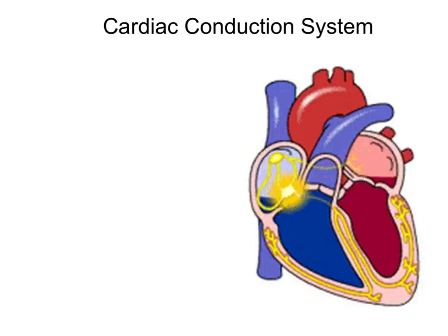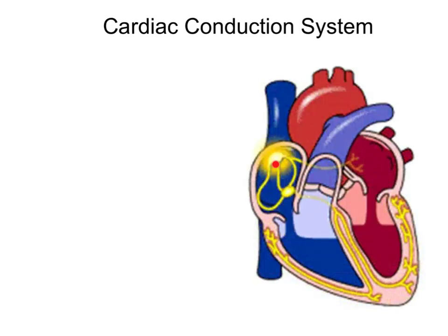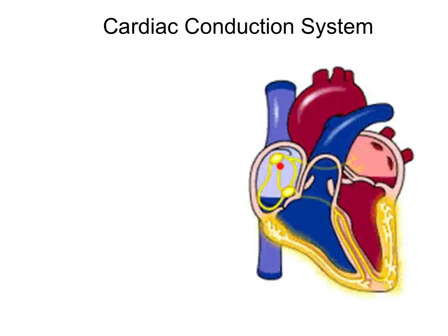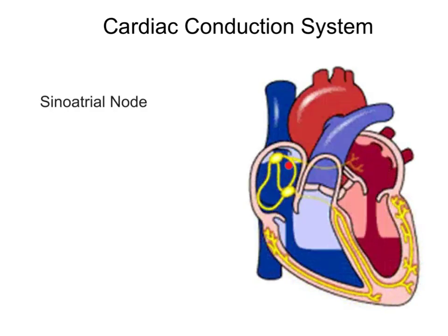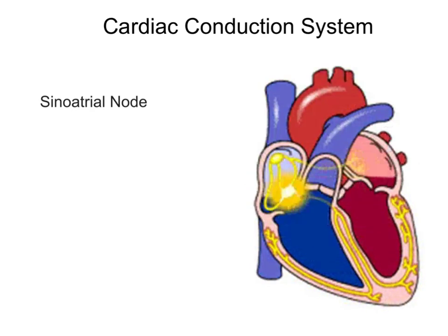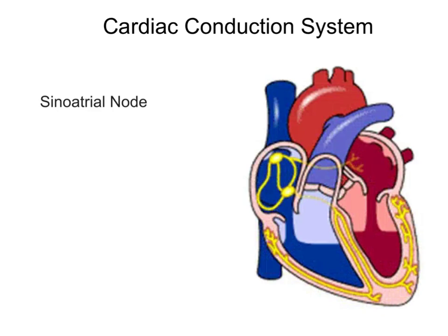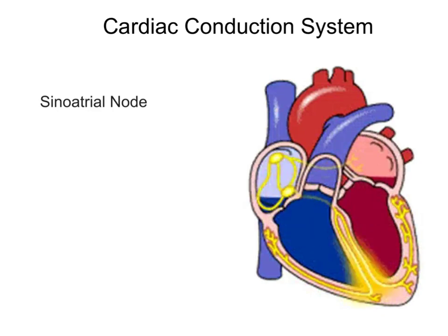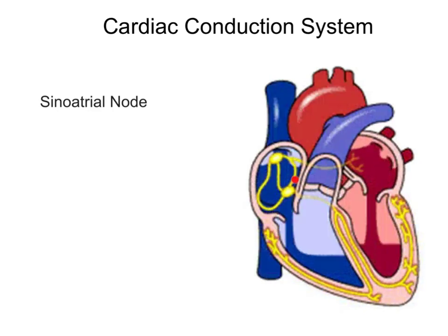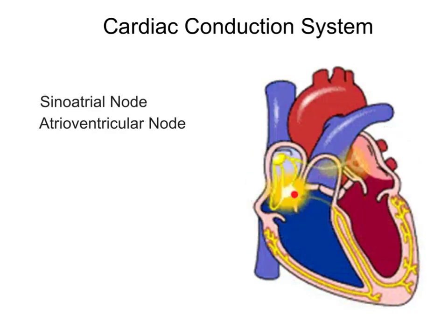In the animation of the cardiac conduction system, you can see that the electrical impulse starts at the sinoatrial node. That electrical impulse will travel through the atrial walls, causing the atrial walls to contract. That electrical signal in the atrial walls is then collected at the atrioventricular node.